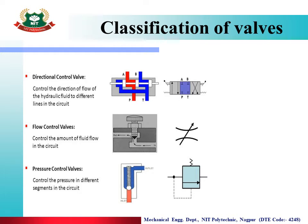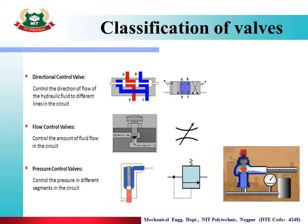Pressure Control Valves control the pressure of fluid in the circuit, whereas directional control valves control direction and flow control valves control flow rate. The pressure control valve adjusts pressure with the help of a spring. When pressure is low, the valve remains closed; when system pressure rises, the valve opens and stops when pressure reduces.